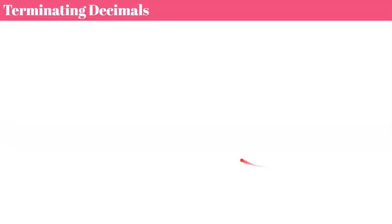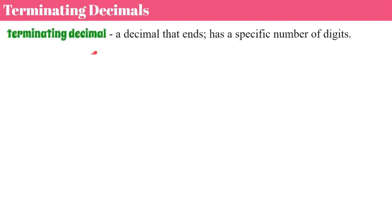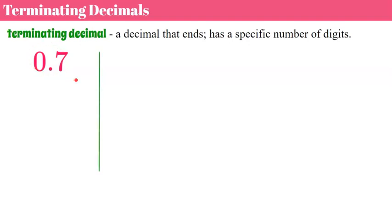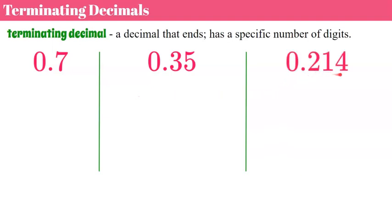So let's begin. We're going to talk about terminating decimals first. By definition, a terminating decimal is a decimal that ends and has a specific number of digits. So 0.7, or 7 tenths; 0.35, which is read mathematically as 35 hundredths; and 0.214, or 214 thousandths. What makes these terminating decimals unique is we can write them as fractions — as you speak it mathematically is how you write it as a fraction.